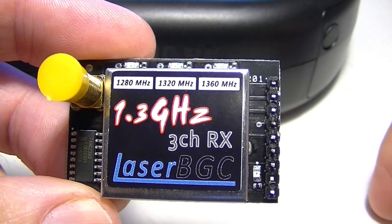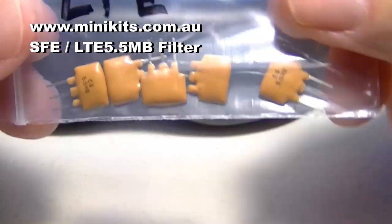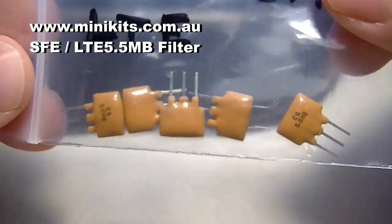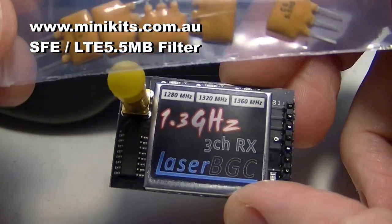So what I did was ordered some trap filters from Mini Kits in Australia, and here's what they look like. I'm going to change the one in the receiver with one of these, and I'm going to show you how to do it.